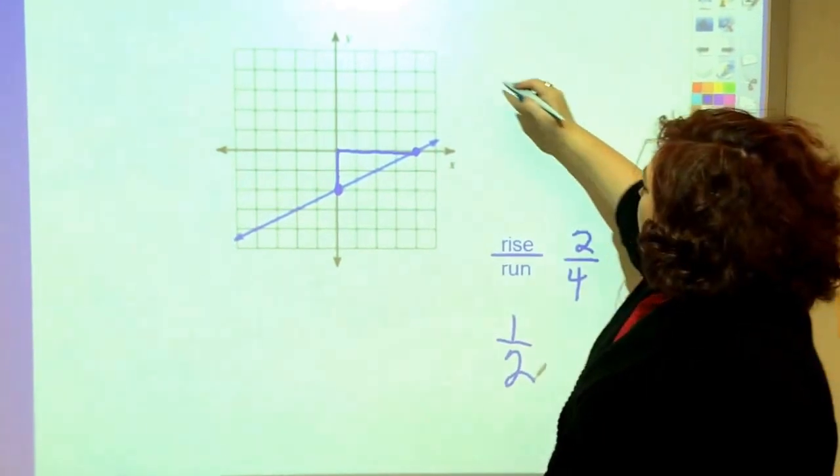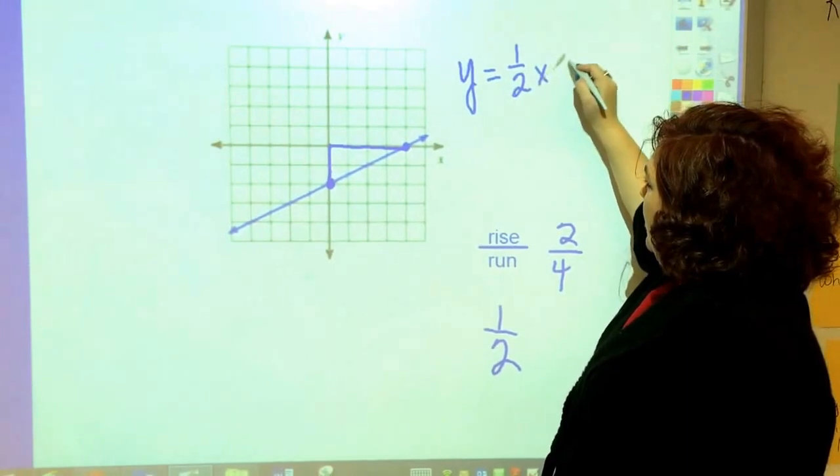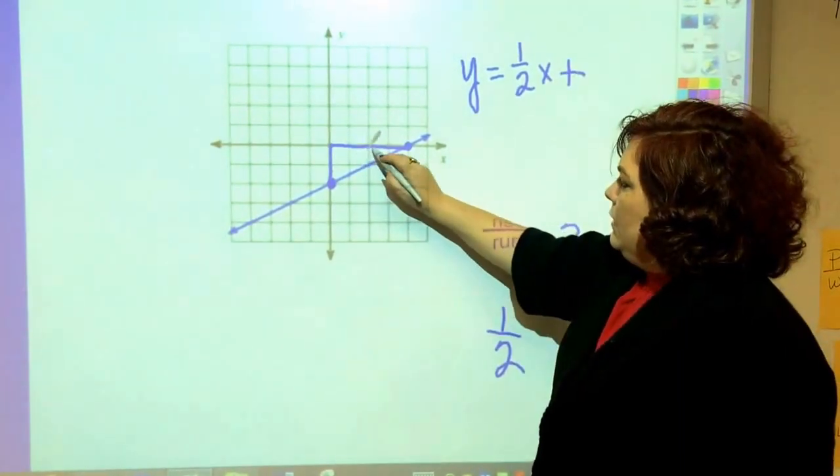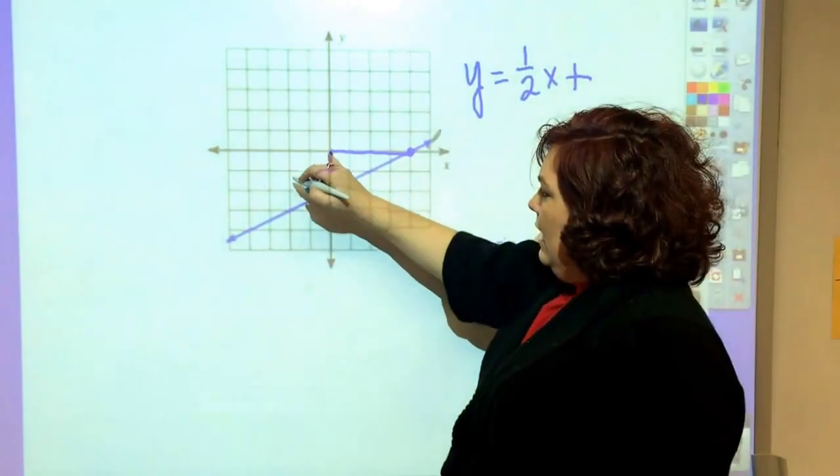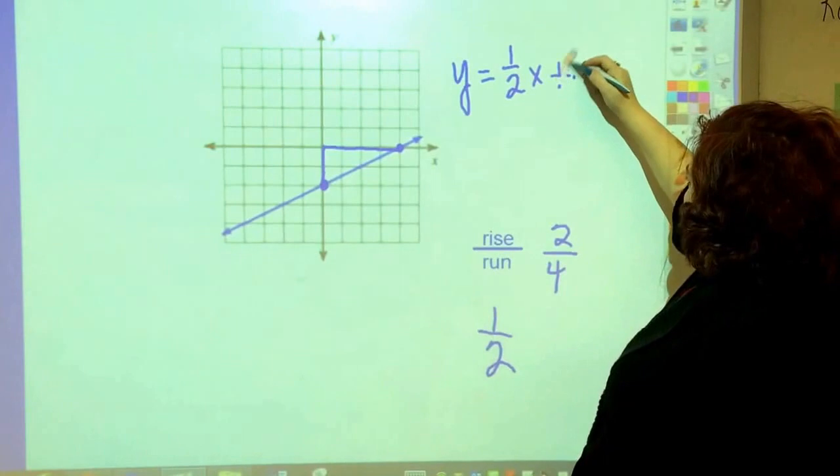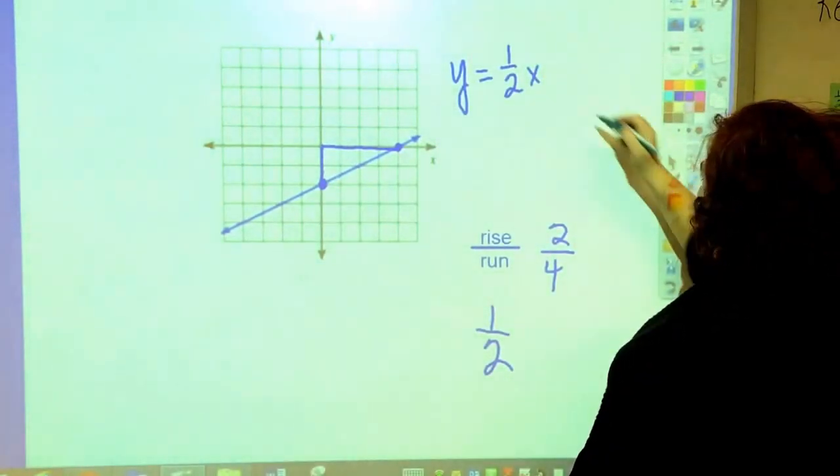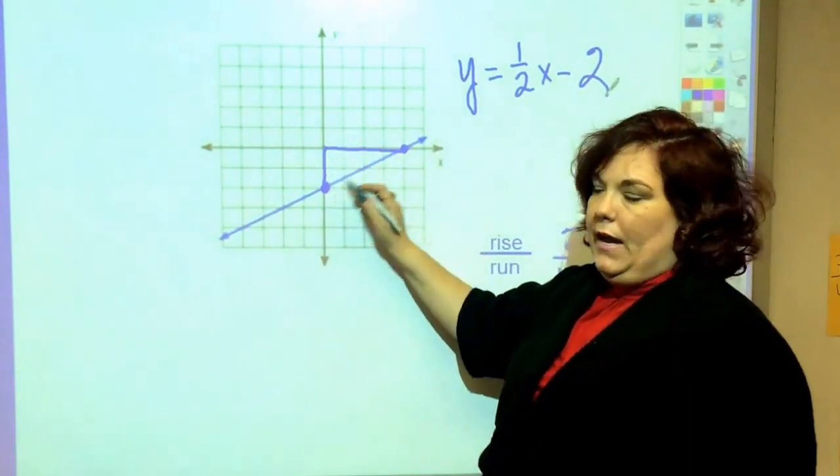And so my equation is y equals 1 half x plus 1, 2, 3, 4 crosses – oops – the y axis at negative 2. So negative 2. That's where it crosses the y axis.